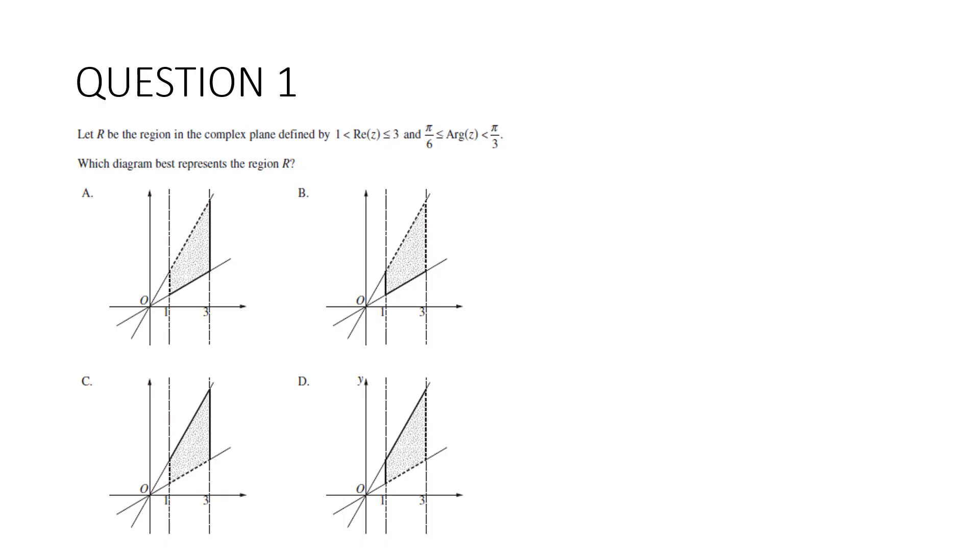Question 1. Let R be the region in the complex plane defined by the real part of z is between 1 and 3, including 3, and the argument of z is between π/6 and π/3, including π/6. This question comes down to is it a dotted line or a solid line, which is a stupid question in my humble opinion.